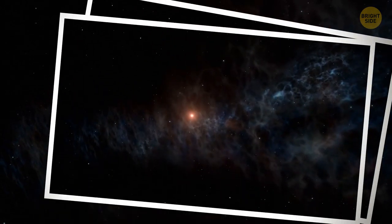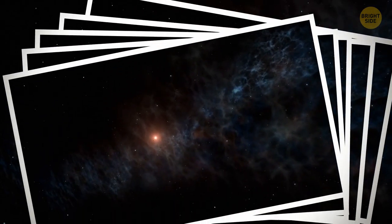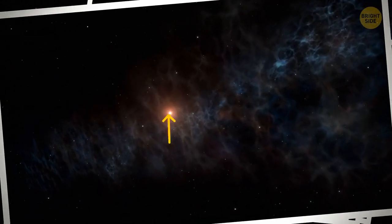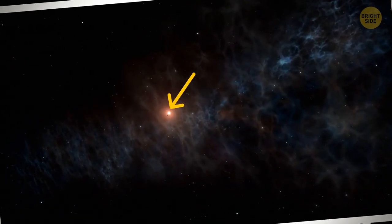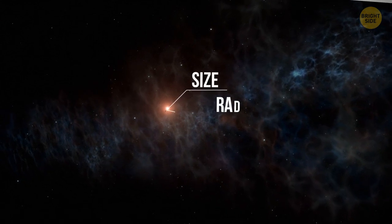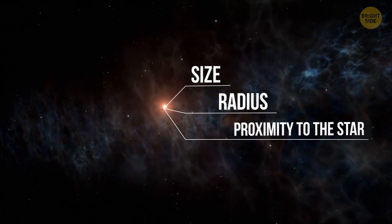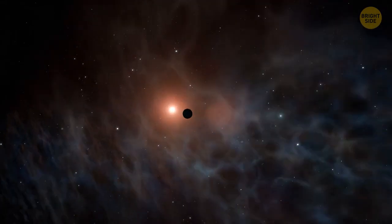These photos actually help us to discover some very important stuff. Like, first of all, this planet exists. Secondly, here is its size, radius, and proximity to the star. And finally, will we be able to live there?